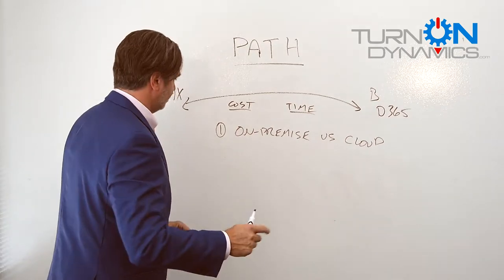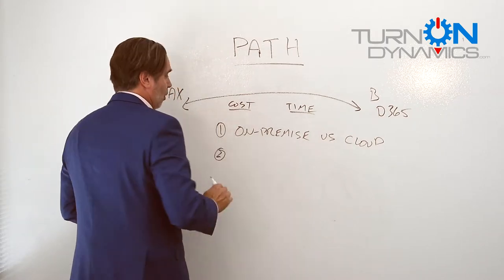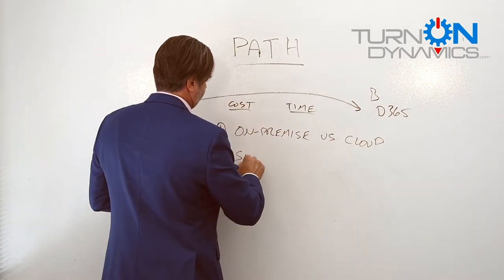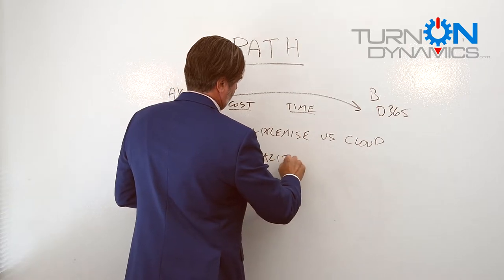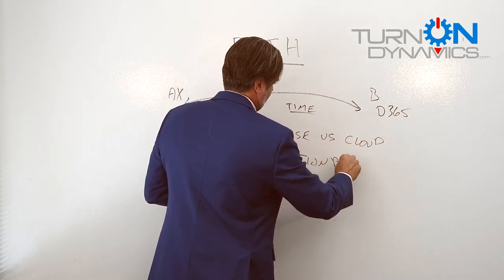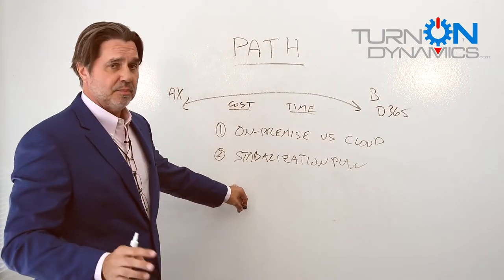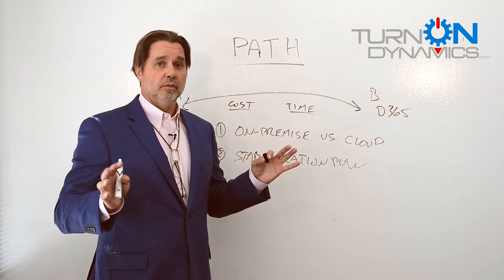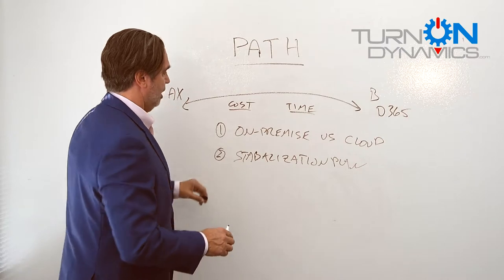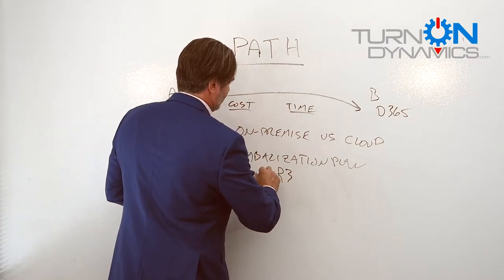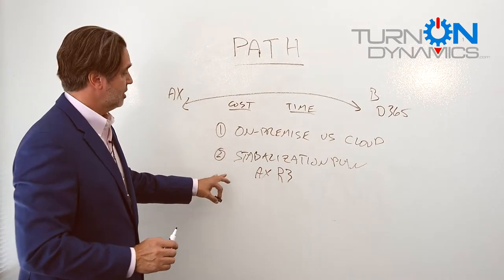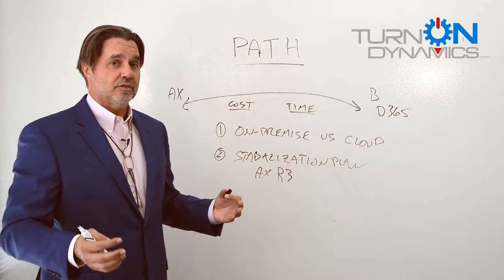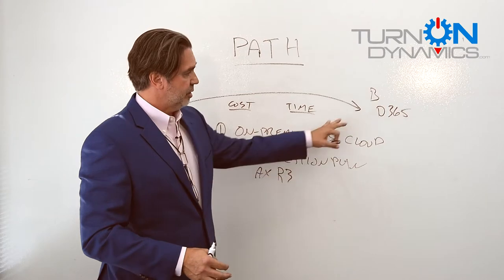The second thing that we were surprised about was that there were folks that decided not to do this today — they decided to do what I call a stabilization plan. What I mean by that is they said this move today is too expensive and too new, and so they didn't want to undergo it. Instead, the stabilization plan is to upgrade to AX R3, the latest version, and once stabilized there, wait for the D365 process to become faster and less expensive, then move from R3 to D365.